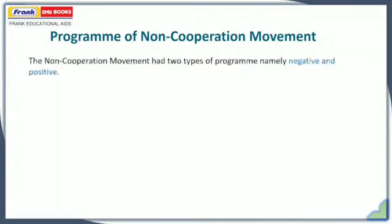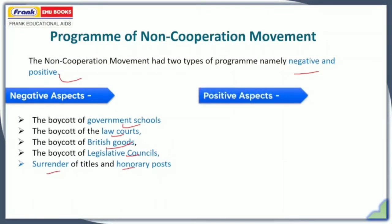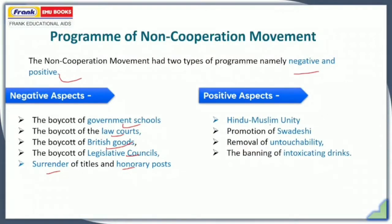We will now analyze the program of the non-cooperation movement. The program was of two types: negative and positive. The negative aspect included the boycott of government schools, boycott of law courts, boycott of British goods, legislative councils, and surrender of titles and honorary posts. As per the positive aspects, we saw Hindu-Muslim unity, promotion of Swadeshi, removal of untouchability, and the banning of intoxicating drinks.